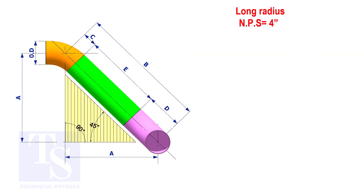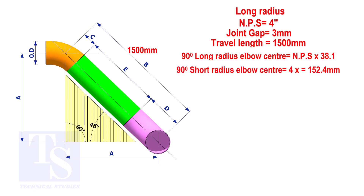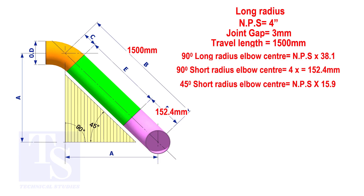Assume that the elbows are long radius. Calculate the true length of the pipe. The elbow center is the nominal pipe size multiplied by 38.1, so the elbow center of the 90 degree elbow is 152.4 millimeters. To calculate the elbow center of a 45 degree long radius elbow, multiply the nominal pipe size by 15.9. The answer is 63.6 millimeters.